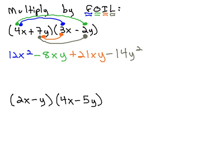Once we've done all the multiplying, we simply have to identify any like terms and combine them if we can. Here, we have like terms in the middle that need to be combined, negative 8xy plus 21xy. We now have 12x squared plus 13xy minus 14y squared.